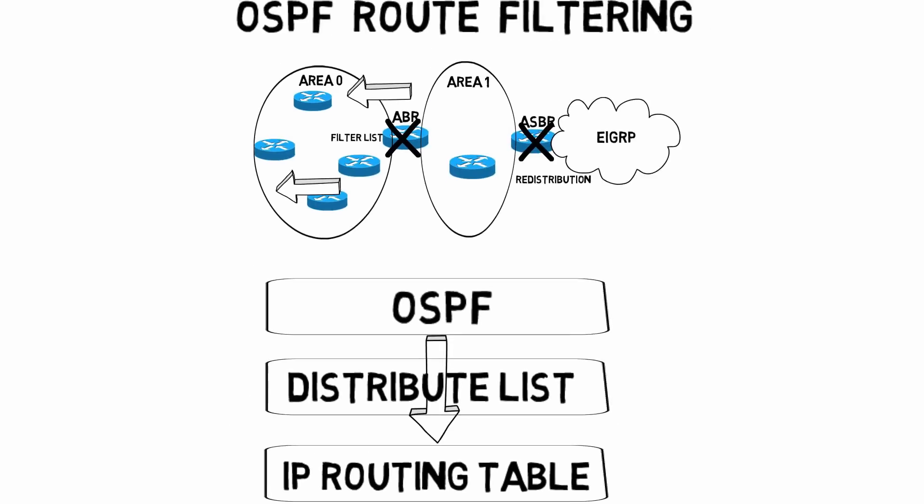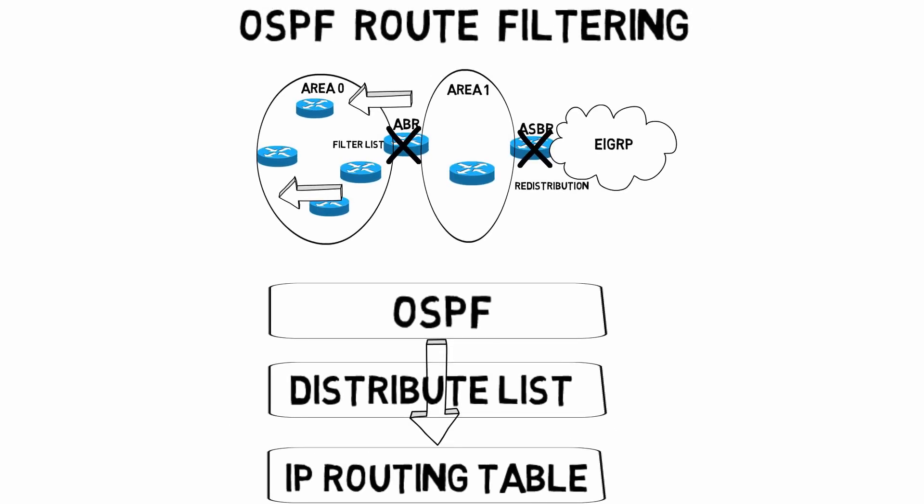Those are the three primary approaches to OSPF route filtering. In this video we'll demonstrate two of them: setting up a filter list on an ABR to block a Type 3 LSA, and configuring a distribute list on a specific router to block a route from being learned by just that router's IP routing table. Let's go to the live interface and see how to set up a filter list on an ABR.